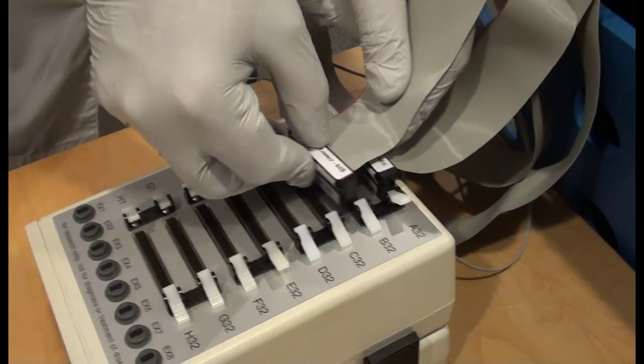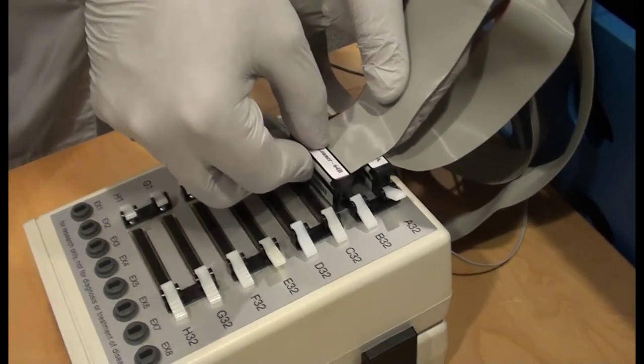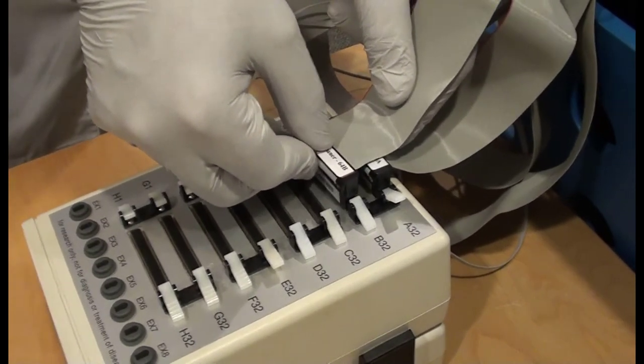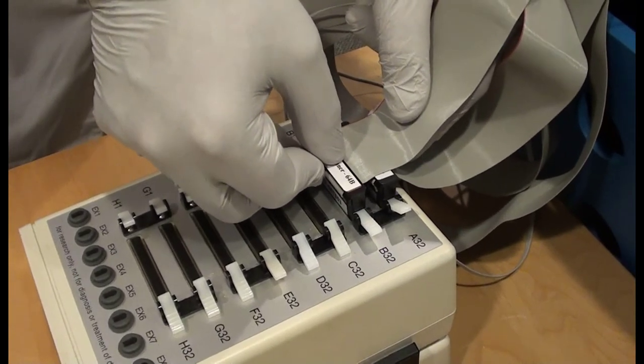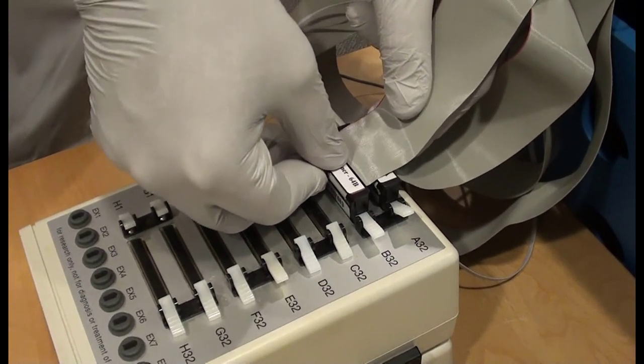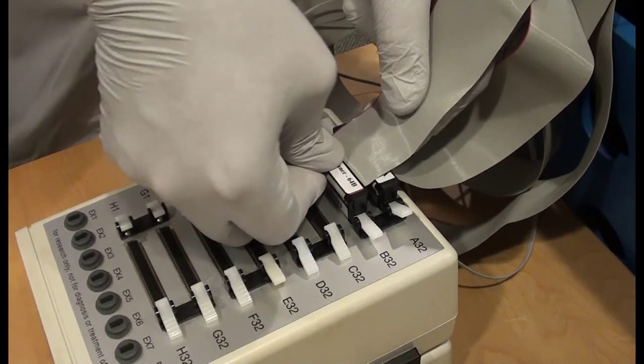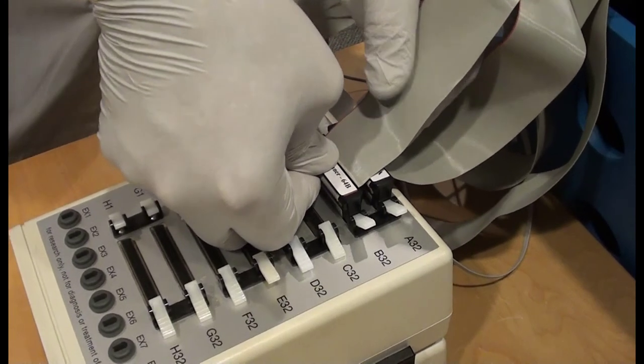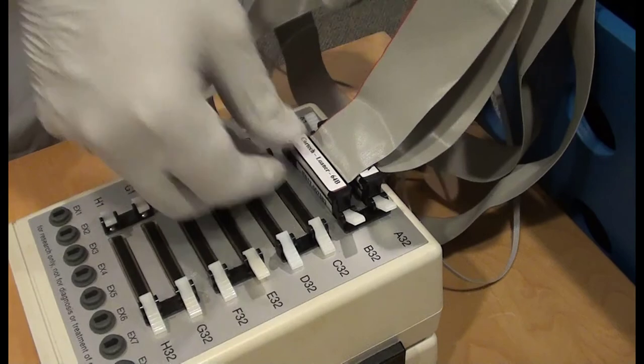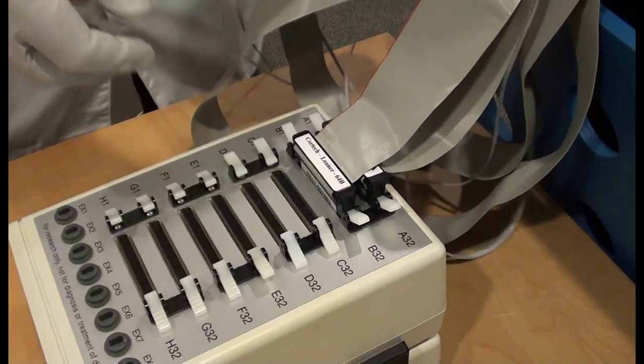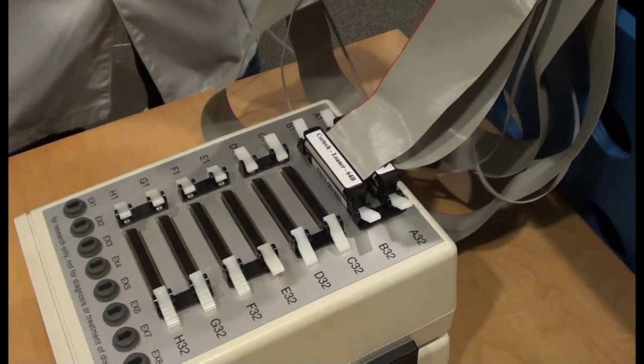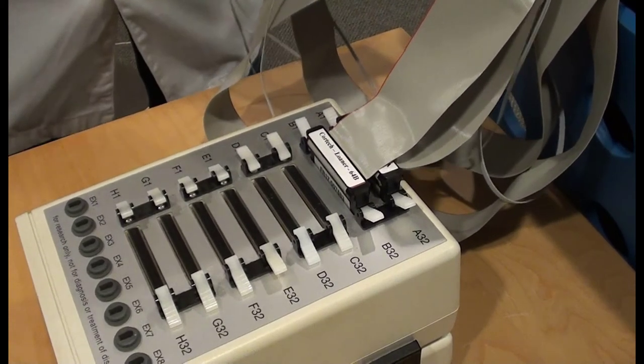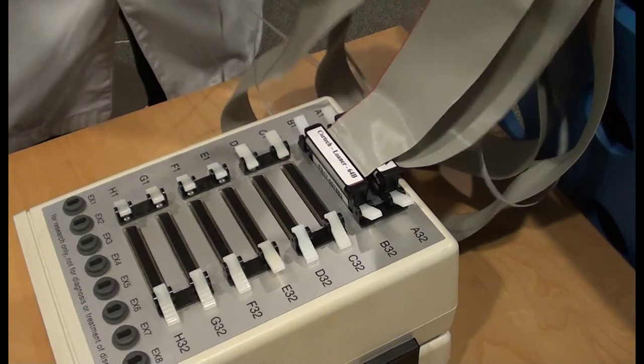Plug the electrode cables into the AD box. In this 64 channel example, the ribbon cable connector with the label ending in A goes in the A connector, and the one with the label ending in B goes in the B connector. Orientation is important. Make sure the red line on the ribbon cable is toward the left side of the AD box when you are looking at the front panel of the AD box. If you try to insert these connectors in the wrong orientation, it is possible to bend the pin on the electrode connector and or damage the connector on the AD box.